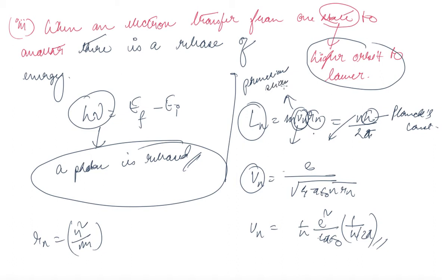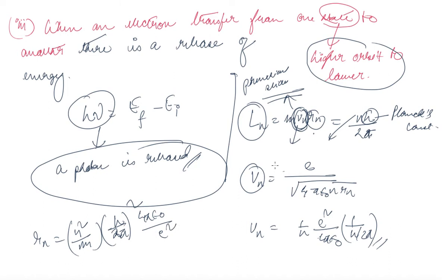The value of v_n was established from previous slides. Since v_n equals 1/n times a constant, put that value in. Then r_n is given by n squared times (h upon 2·pi) squared times 4·pi·epsilon_naught upon e squared. Using L_n = m·v_n·r_n = n·h upon 2·pi, substitute v_n and r_n to get your final result.